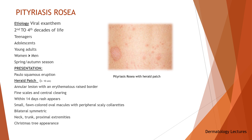Pityriasis rosea is a common self-limited papulosquamous eruption that may resemble tinea corporis. Although its etiology is unknown, current data suggests that pityriasis rosea may be a viral exanthem. It usually occurs during the second to fourth decades of life with peak incidence in teenagers, adolescents, and young adults. Women are more likely to be affected. Pityriasis rosea appears to occur more often during the spring and autumn seasons. Although most pityriasis rosea lesions are macules, papules, or plaques, the initial presenting lesion — also known as the herald patch — may appear as an annular lesion with an erythematous raised border, fine scale, and central clearing. The herald patch is generally a singular ovoid macule located on the trunk and can range from 2 to 10 cm in diameter.